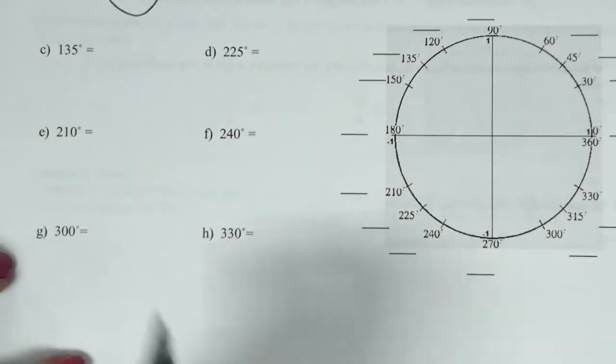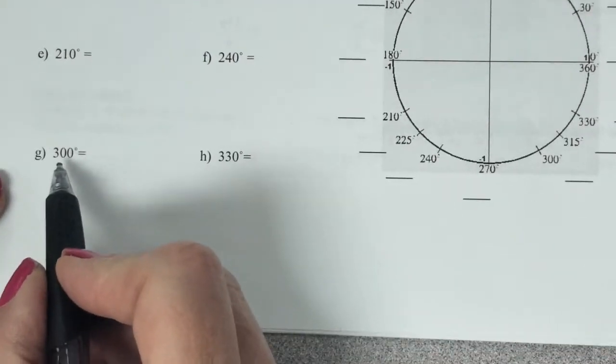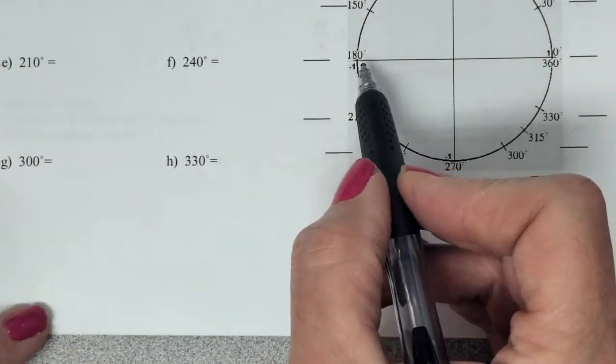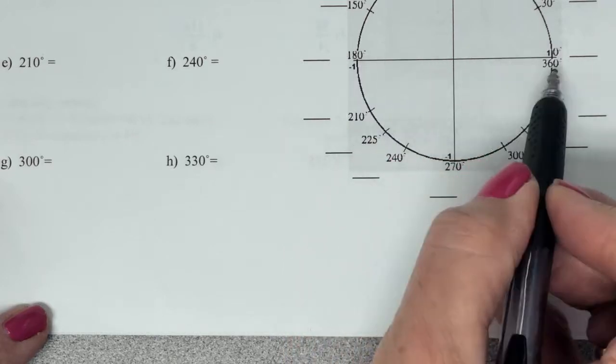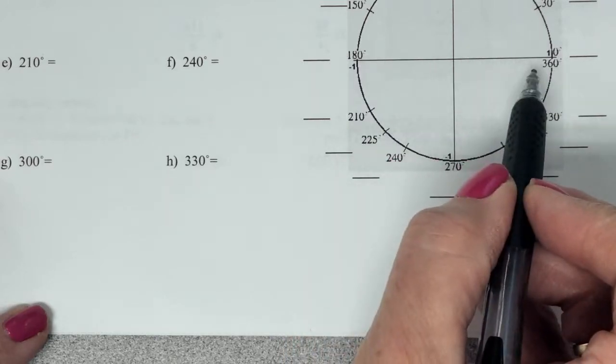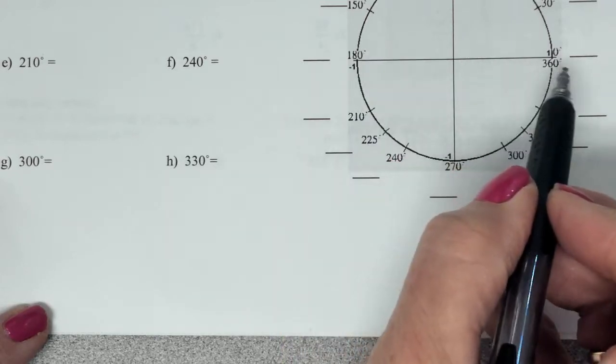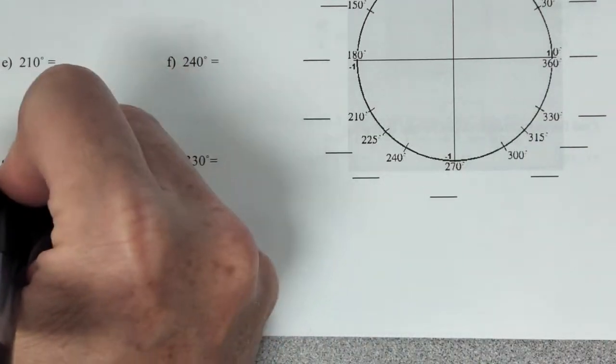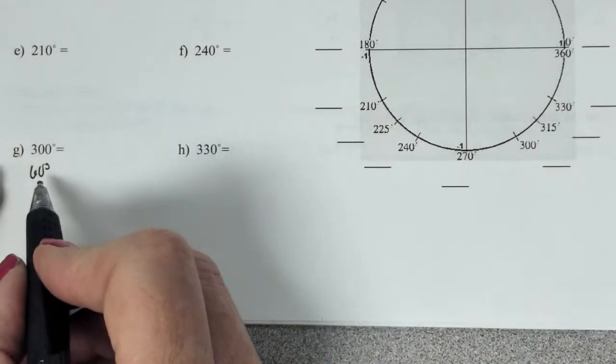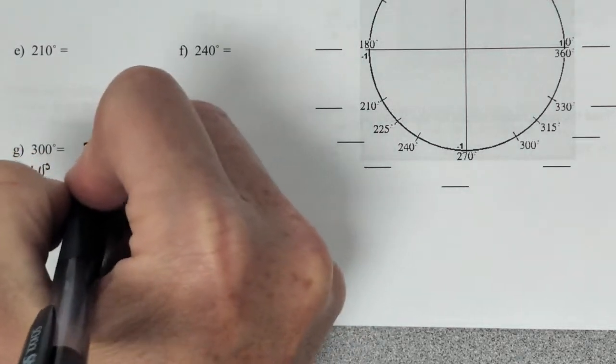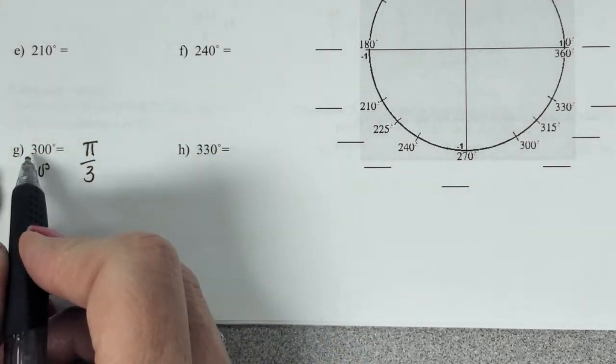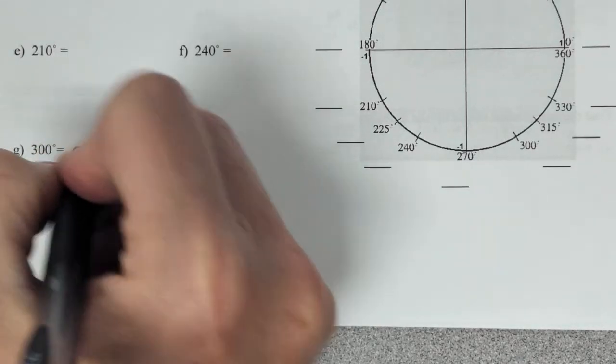We'll do one more. Let's go down here. 300. How far away is it from the x-axis? Because that's the reference angle. 60. 60 away, because we do either the 180, the 0, or the 360. So that's going to be a 60 degree reference. What's 60? Pi over 3. Good. And then 60 times what's 300? 5. So that's 5 pi over 3.